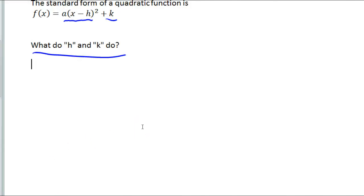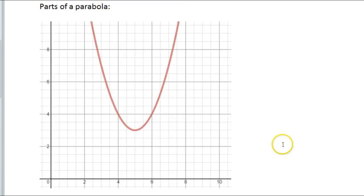Back to our standard form, one thing to remember is that it's always x minus h, and this is always plus k. That's going to help us find that little low point, that vertex. So now we're ready to talk about the parts of a parabola.